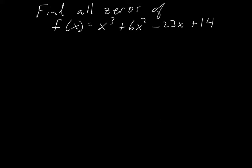Normally a problem like this with four terms we might try to factor by grouping — put two terms together and the other two together. But if you look at this even for a second, you can see there's no way that factoring out x² here would give you a matching factor. So we're going to build off of what we did yesterday: list all possible rational zeros and start checking them.